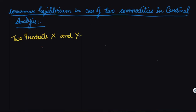Hello class, today we will be studying consumer equilibrium in the case of two commodities in cardinal analysis. You can find consumer equilibrium in two approaches: number one is cardinal analysis and number two is ordinal analysis. We did consumer equilibrium in the case of one commodity in a previous class; in this class we will be doing it for two commodities in cardinal analysis.